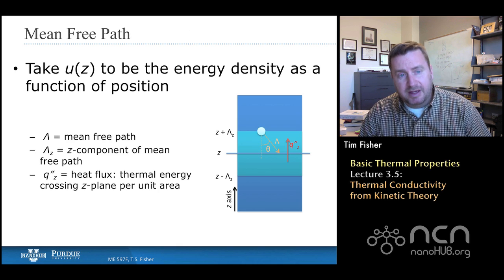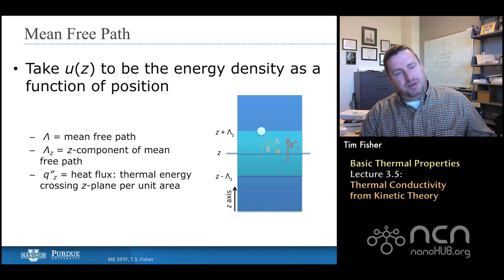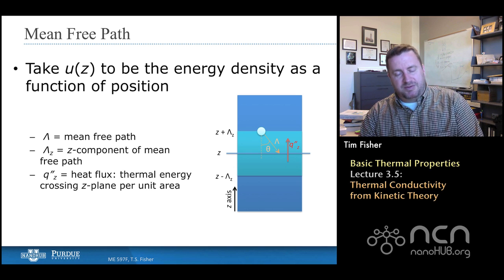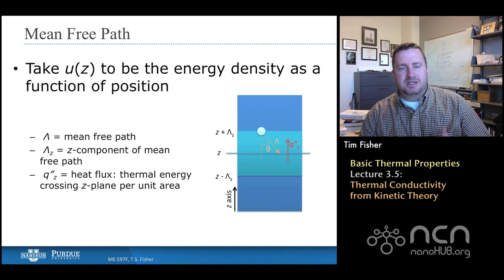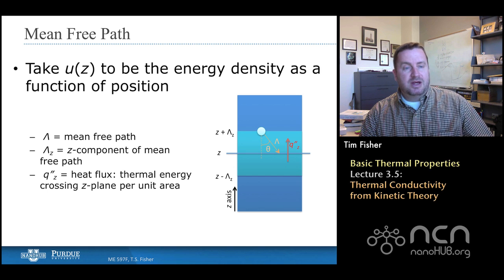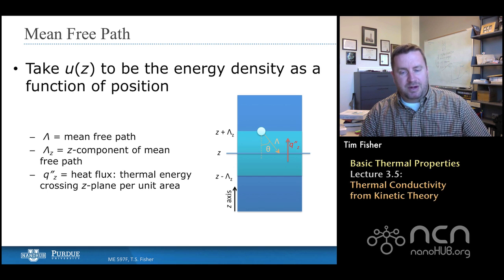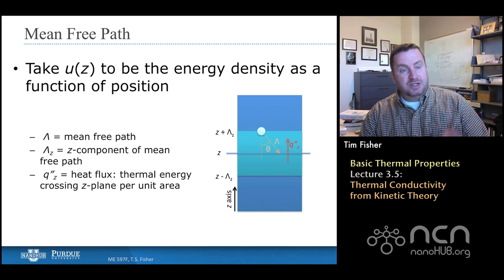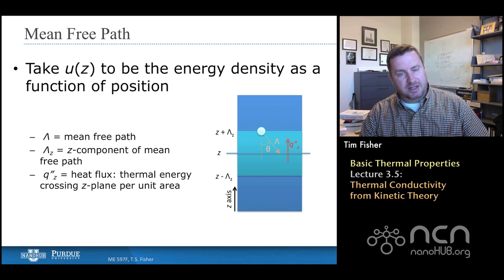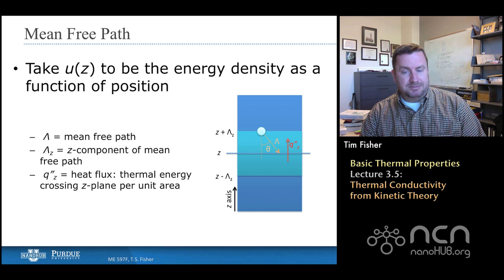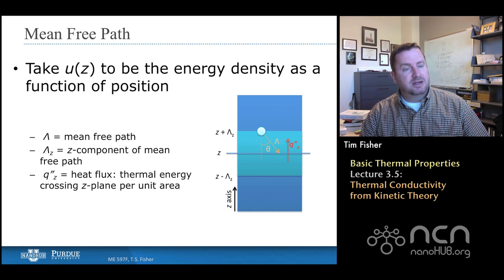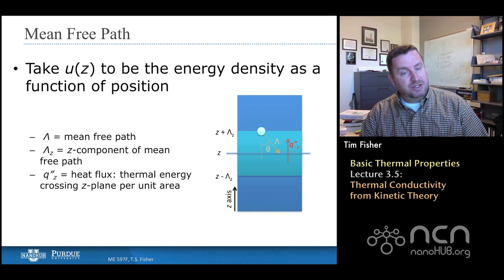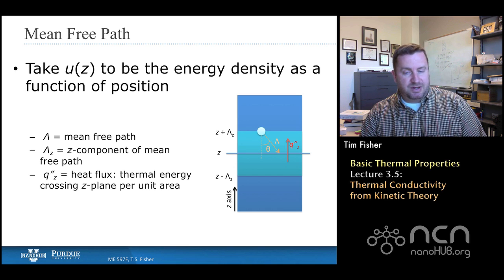So we'll talk here about the mean free path, and we're going to go back to some things we discussed earlier in the week, specifically the specific internal energy, u. We're going to assume that this energy density is a function of position. That means that in one part of the material, the energy density is different than in another. We're only going to focus our attention in one dimension, at least in terms of this energy density gradient, and we're going to look at what happens as carriers move through this space and how they might collide, how they carry that energy, and then ultimately derive thermal conductivity from that.